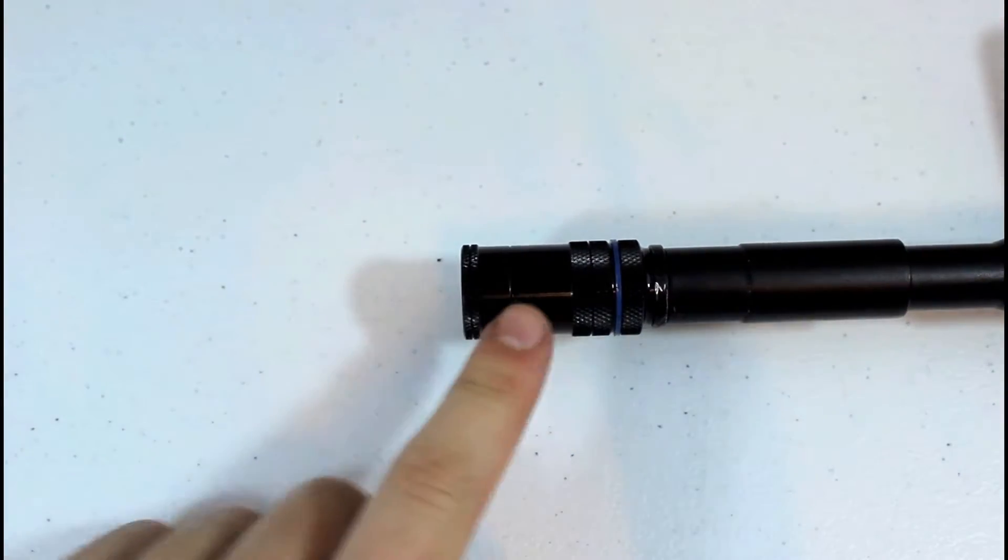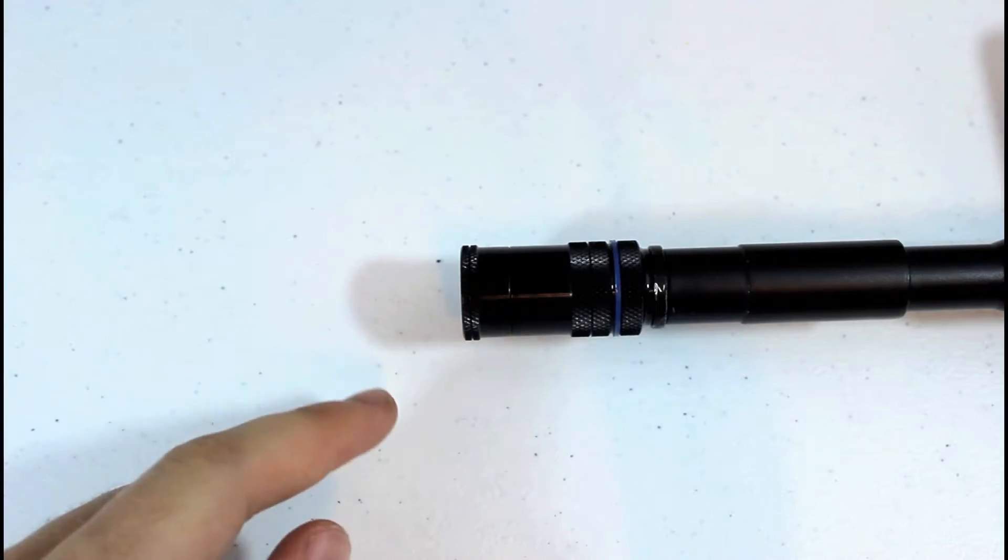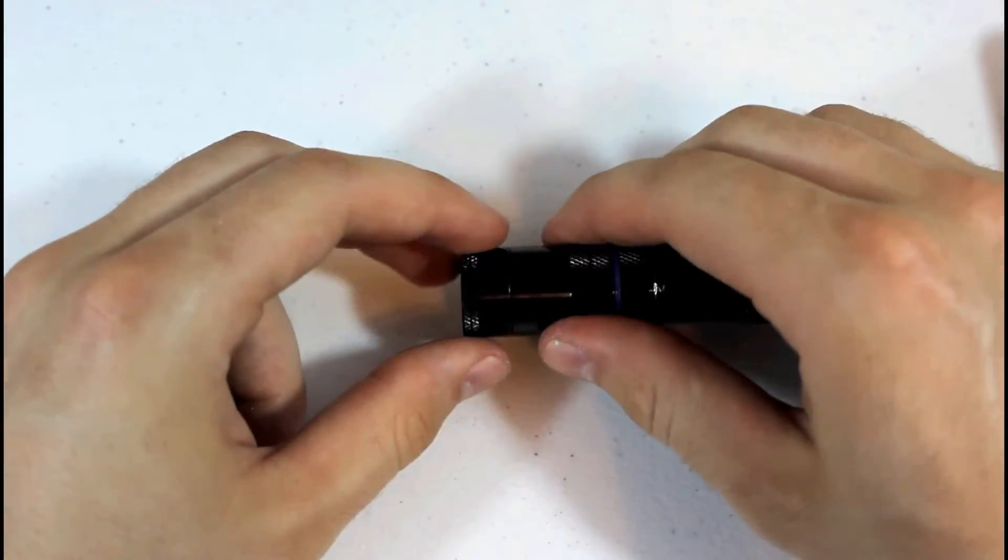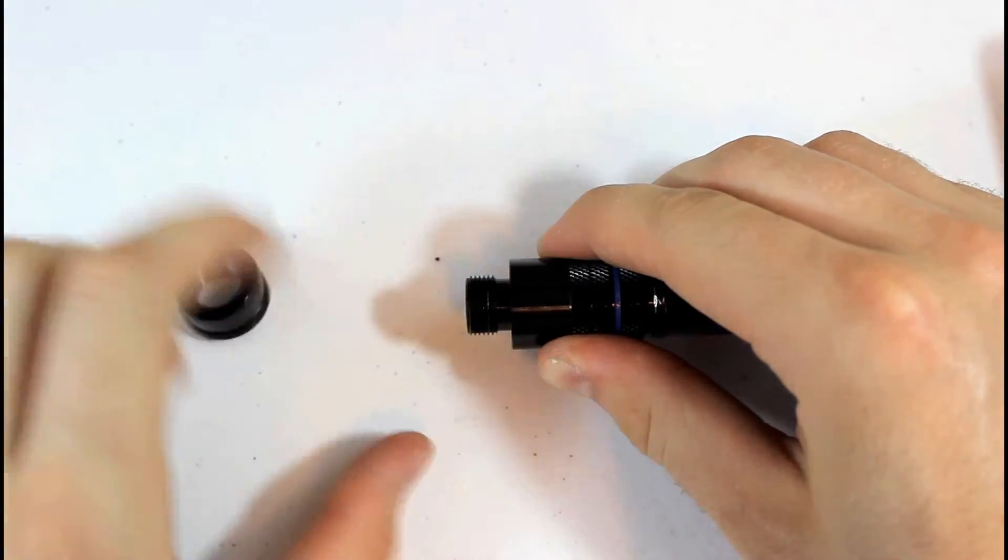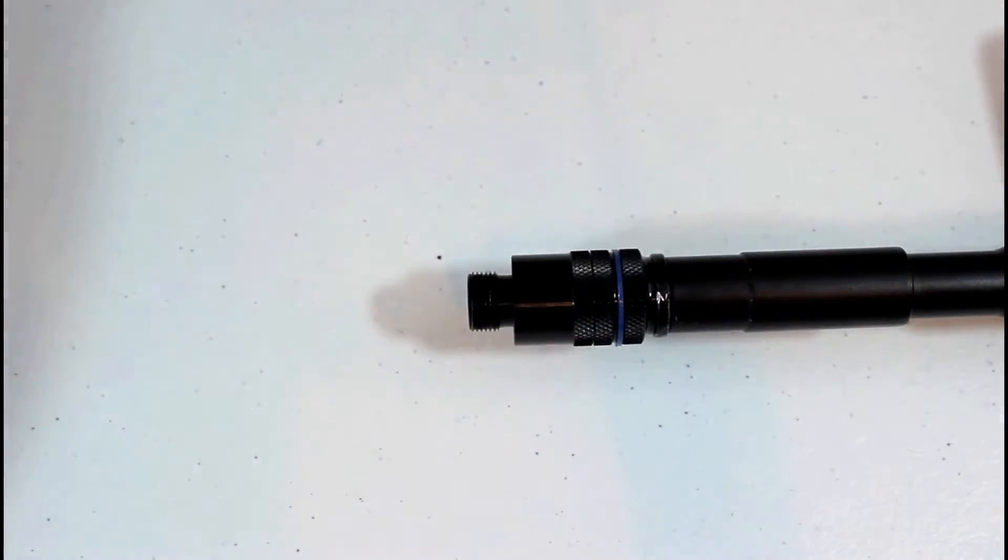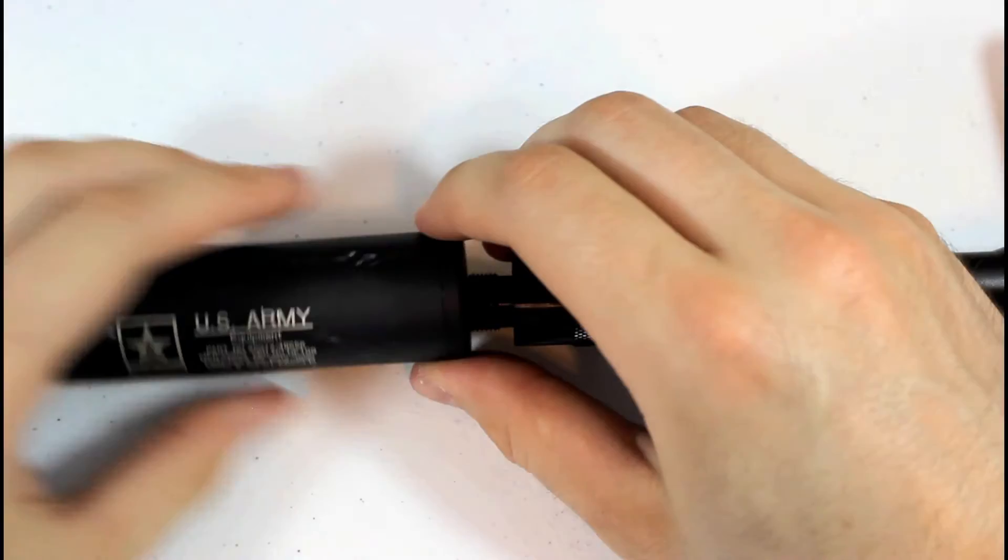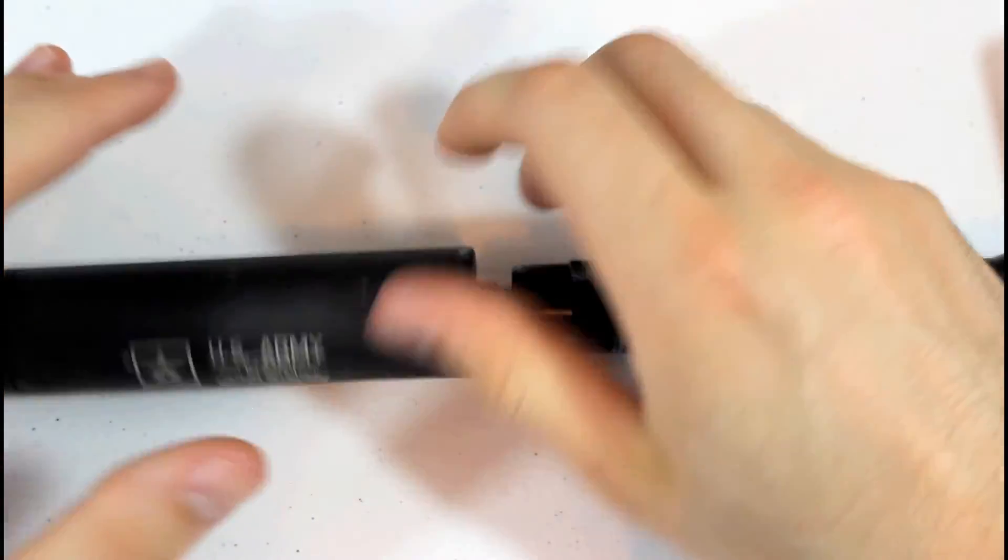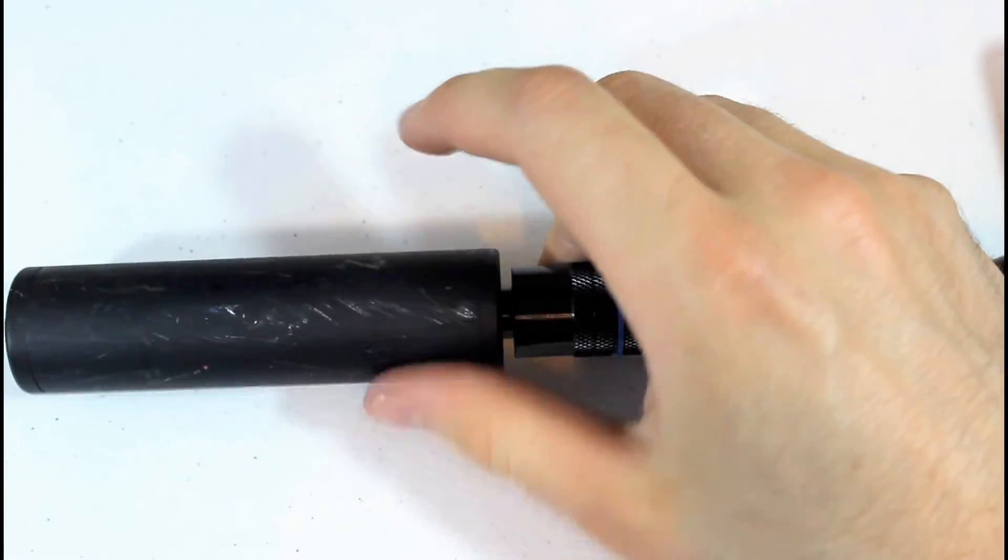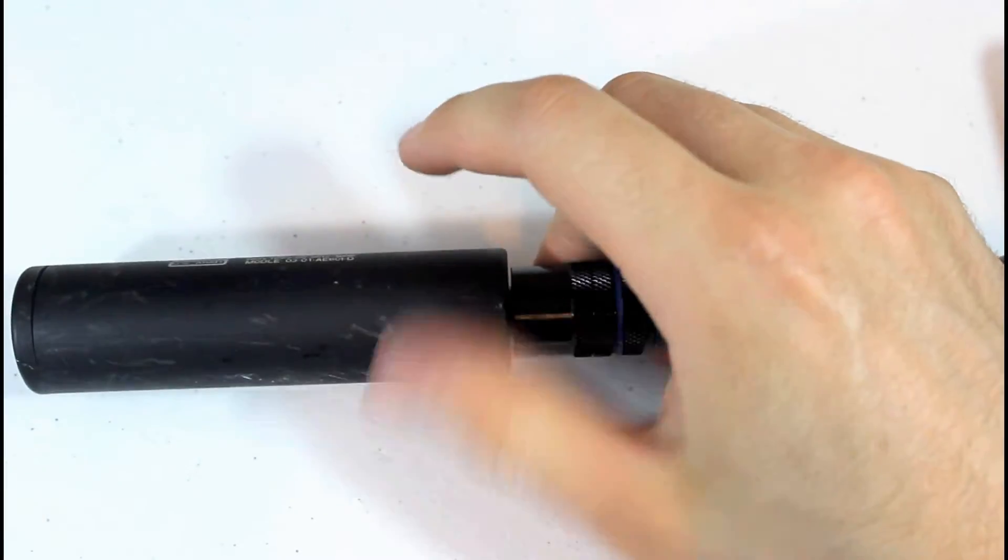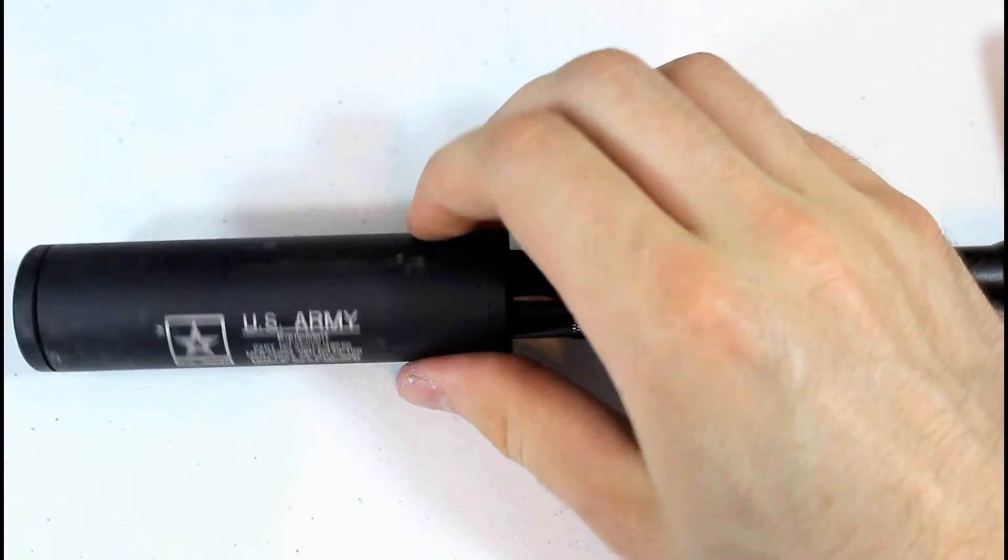If you don't want this as your flash hider, and you actually have a flash hider or maybe a suppressor you want to install instead, you can screw off the end of your adapter and then screw on your flash hider or suppressor. It has a 14mm counter clockwise male threading on this end, so you're able to install anything that you could on your AEG.